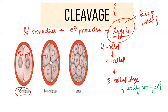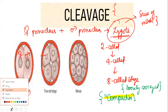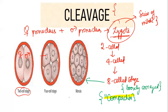After the eight-cell stage, the cells recognize they are loosely arranged and undergo tightening. Tight gap junctions are formed in a process called compaction. Once the eight-cell stage undergoes compaction, all loosely arranged cells become very tightly adherent. This compacted eight-cell stage then undergoes another mitotic division to form the 16-cell stage, which is called the morula.